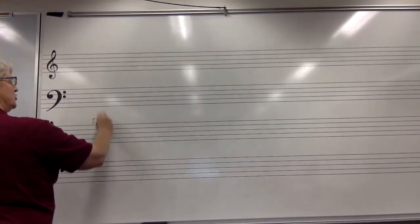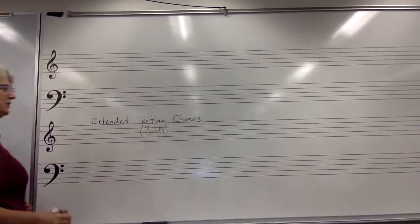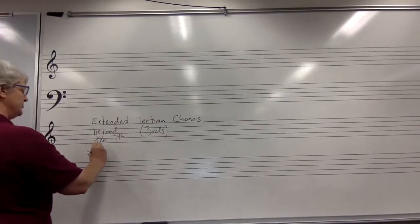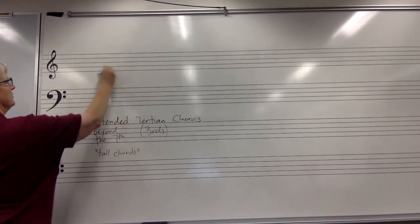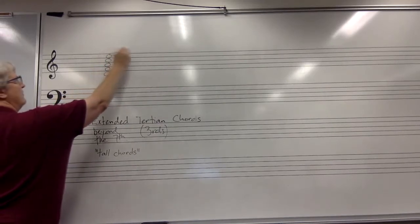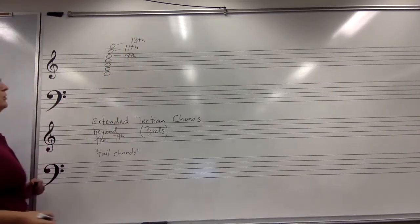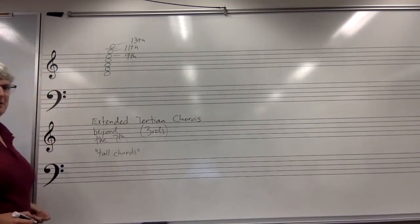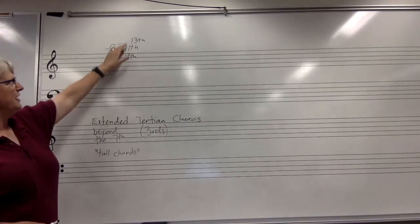When we say extended tertian chords, what we mean are chords that are built out of thirds — that's what tertian means — and they are extended beyond the seventh of the chord. Sometimes these are referred to as tall chords. So if we take a tonic note, normally we have triads and seventh chords built on a root, but we can also have a ninth, an eleventh, and a thirteenth above the root. We wouldn't have a fifteenth above the root — that would simply be a double octave above the root, so that wouldn't be all that interesting. So I'll be talking today about ninth, eleventh, and thirteenth chords.